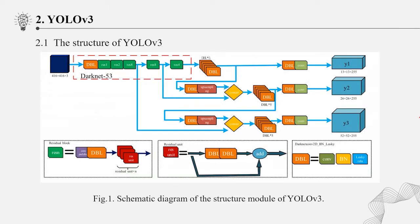YOLOv3, the structure of YOLOv3. The schematic diagram of YOLOv3 structure module is shown in Figure 1. Inside the red dotted line is the backbone network.